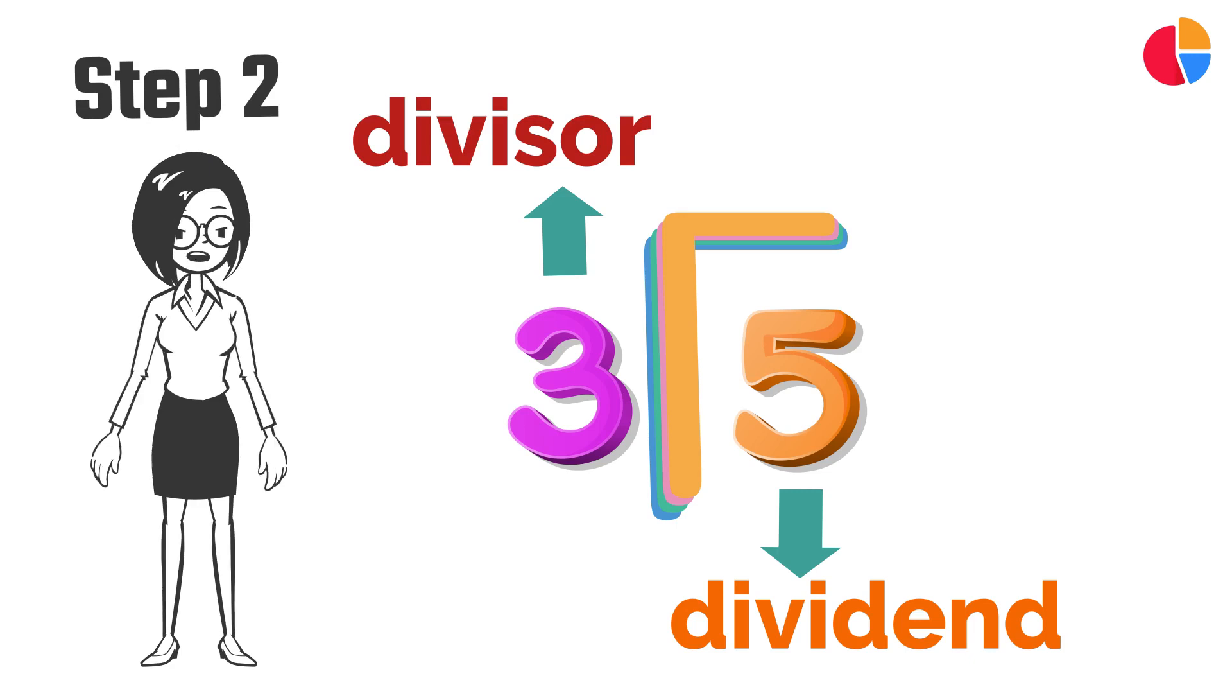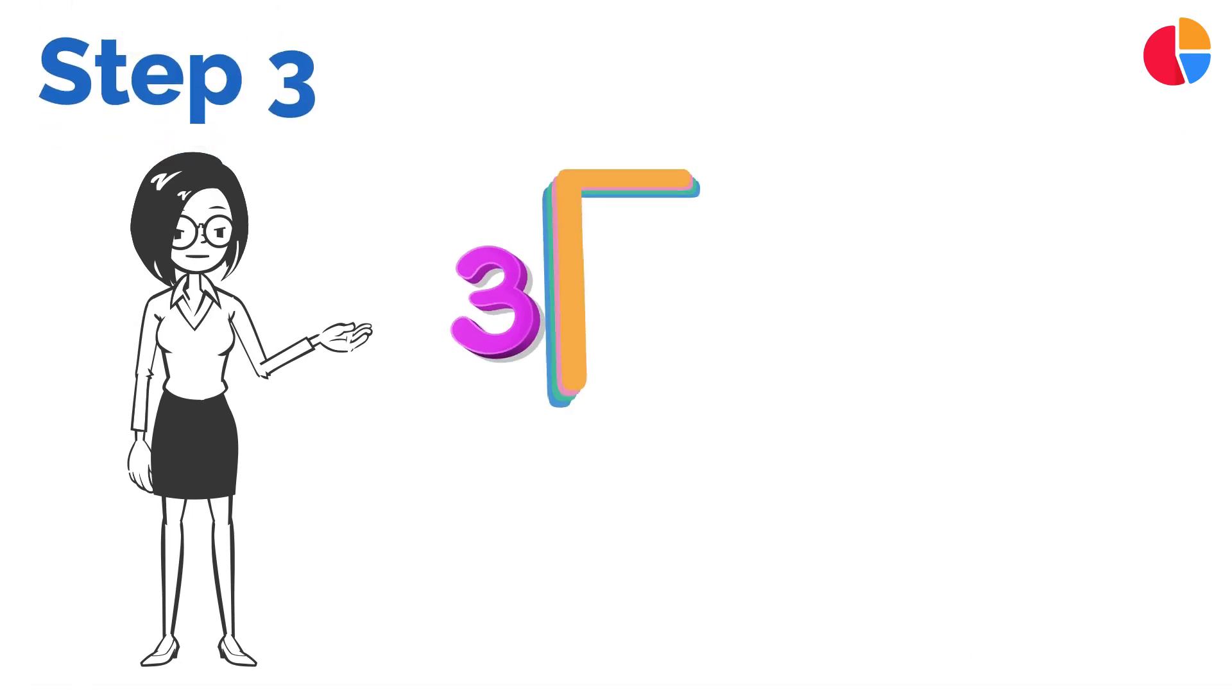Step two: The divisor three goes into the first digit of the dividend five one time. Place one at the top.